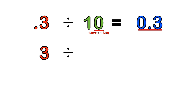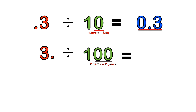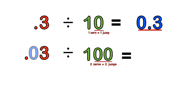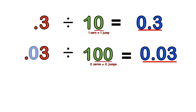How quickly could you do 3 divided by 100? Same method — step one, introduce the decimal point. Step two, count how many zeros: two zeros equals two jumps to the left. Any blank jump means the decimal point is jumping over a zero. We make one jump over the three and another blank jump over nothing, giving us point zero three, or 0.03. Coincidentally, the number of zeros in the answer tells us how many zeros we divided by.